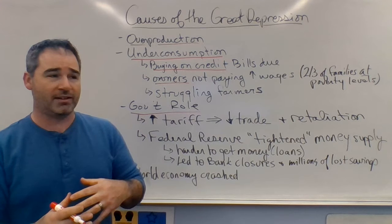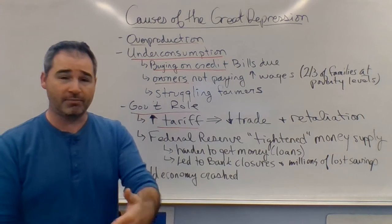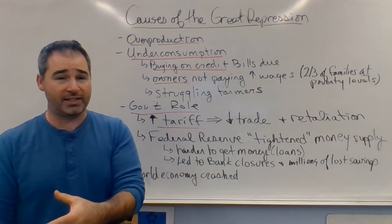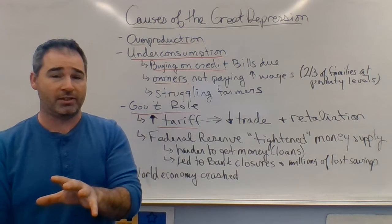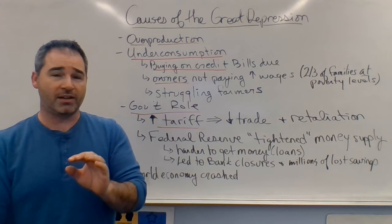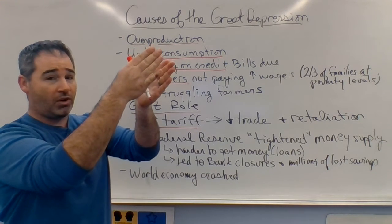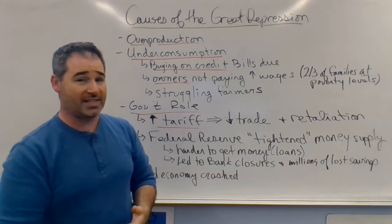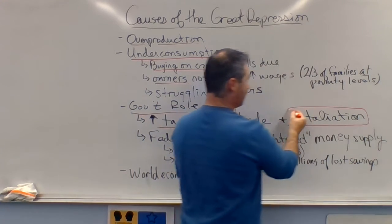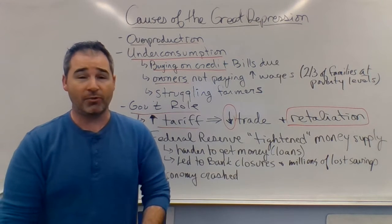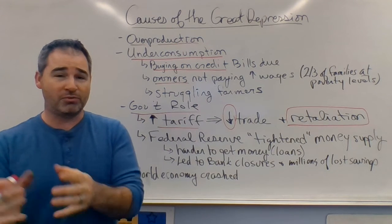Once the stock market crashed, the United States government took steps that actually worsened the depression. The first thing is that they increased the tariff — a tax on imported goods that tries to protect American industry. That made sense back in Hamilton's day when everybody bought locally, but the United States is part of a global economy now. The US essentially threw up a giant tax wall, nearly 50 percent, to prevent foreign companies from trading in the United States. That lowered trade overall, and it led other countries to throw up retaliatory tariffs against American products. What happened is everybody stopped trading, and when everybody stops trading, there's nobody to buy all the overproduced stuff.